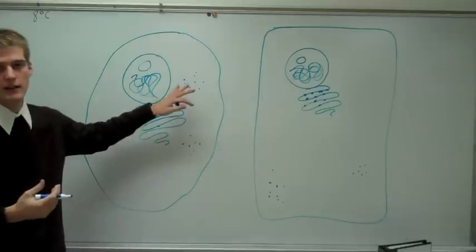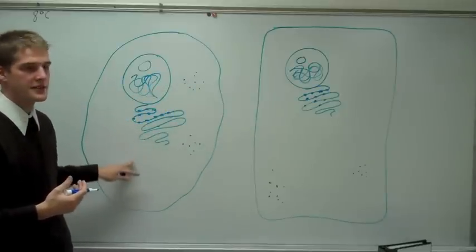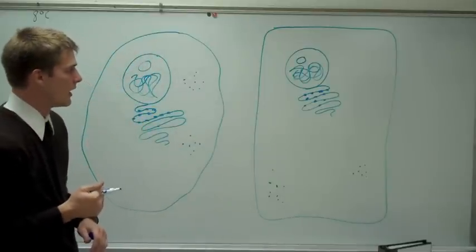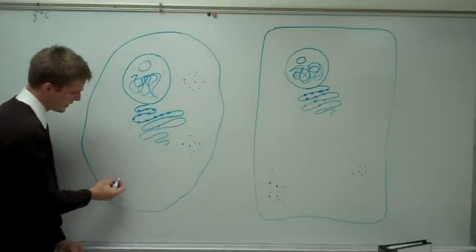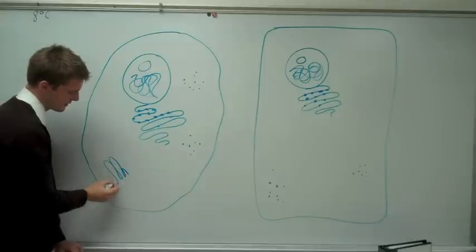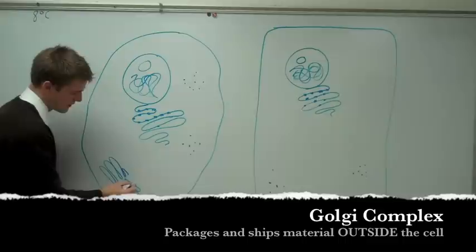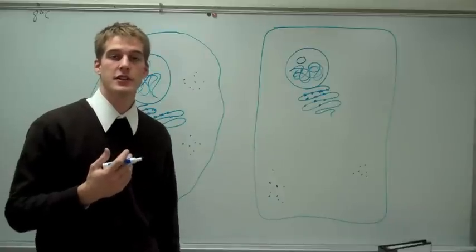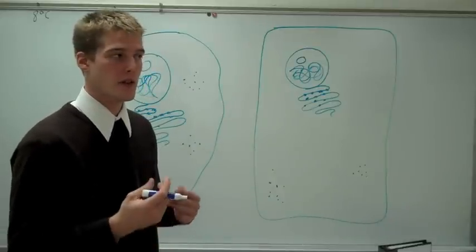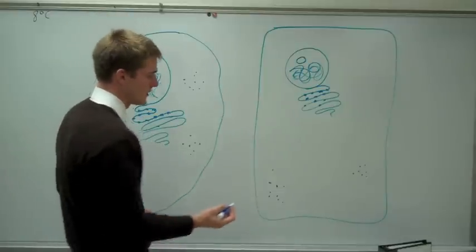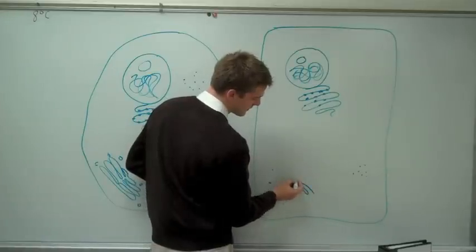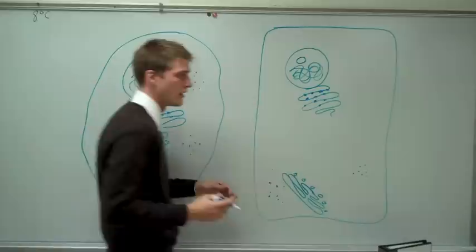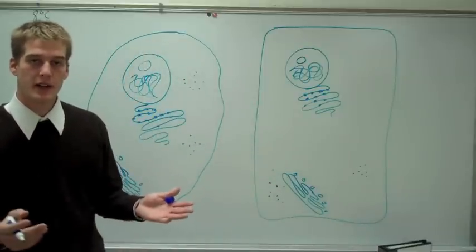The endoplasmic reticulum packages things for distribution within the cell. Anywhere inside the cell that the proteins from the ribosomes have to go, the ER packages them and sends them. This happens in both the plant and the animal cell. Another packaging center within the cell is the Golgi complex. The Golgi complex packages things for distribution outside the cell — it's kind of like UPS. It packages things in little tiny vesicles and sends them to the cell membrane where they're expelled through exocytosis.